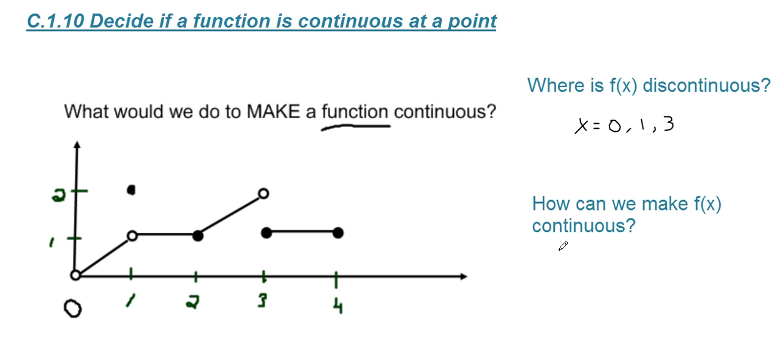For 0, all we have to do is define the function and say f(0) equals 0, and that takes care of that. Now we can also close the gap at 1. If we say f(1) equals 1, notice that's the result of just filling this in.